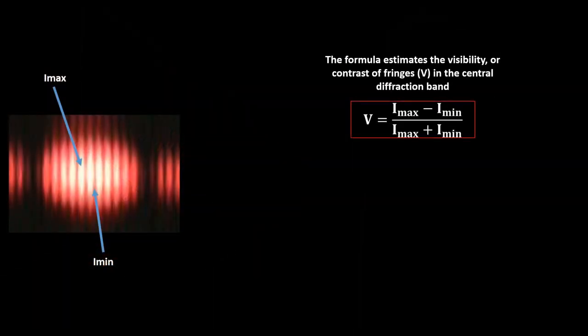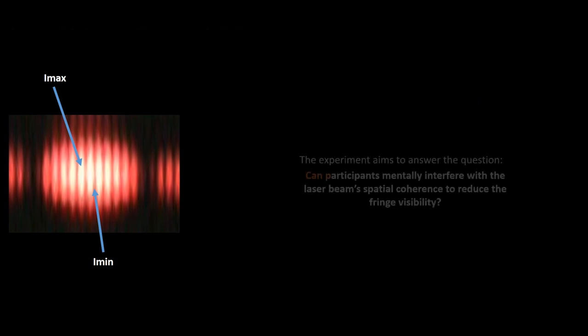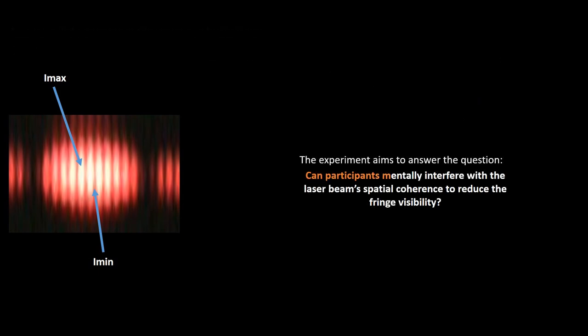The formula estimates the visibility, or contrast of fringes V, in the central diffraction band, where I-max is the light intensity at the center of a bright fringe and I-min is the intensity at the center of a dark fringe. The experiment aims to answer the question: can participants mentally interfere with the laser beam's spatial coherence to reduce the fringe visibility?